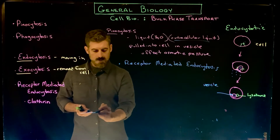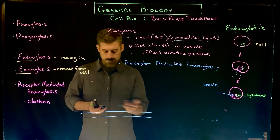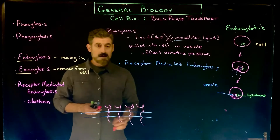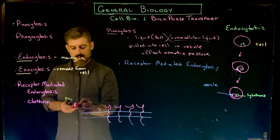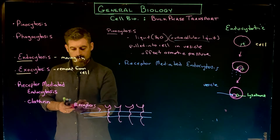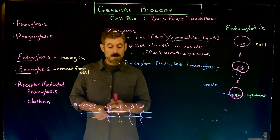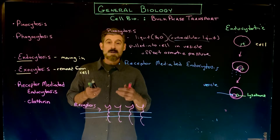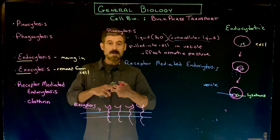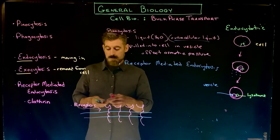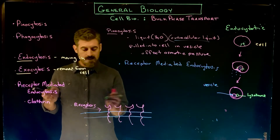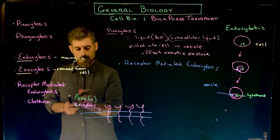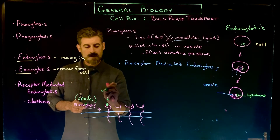Let's look at this process. Say this is a cell membrane. In this membrane we have several transmembrane proteins acting as receptors. Previously we discussed how transmembrane receptors can relay cell signals or be involved in adhesion — like cadherins binding to cadherins on other cells. In this particular case, these receptors are binding cargo molecules with high specificity. The molecule binding to the receptor is called a cargo molecule.